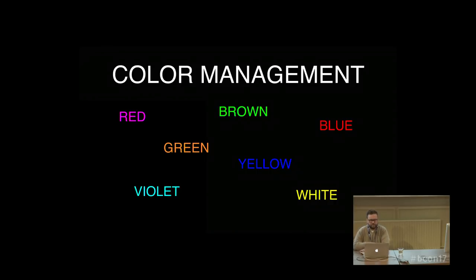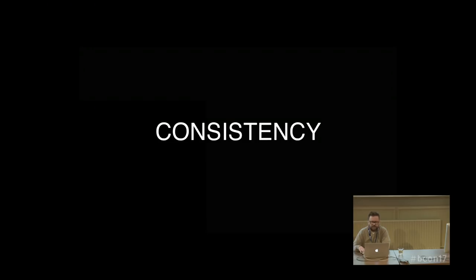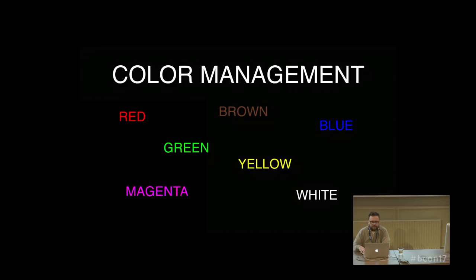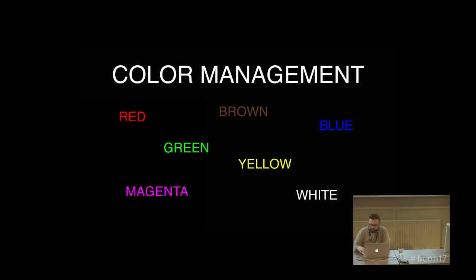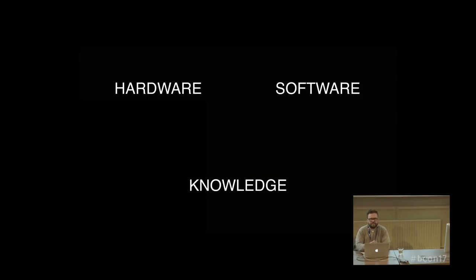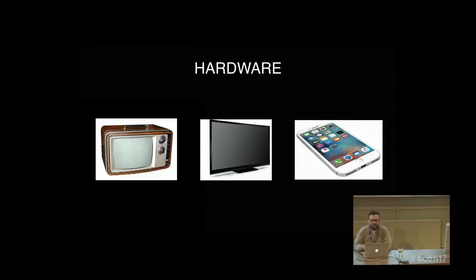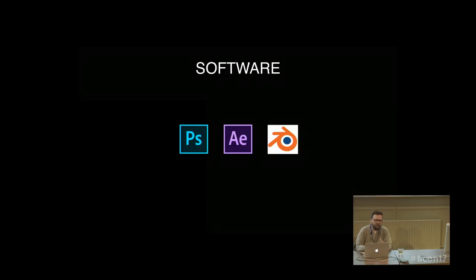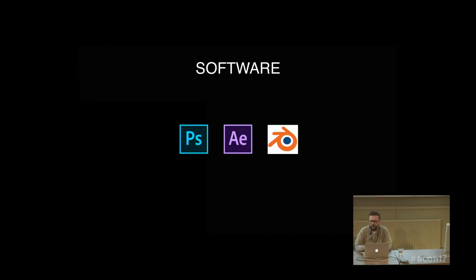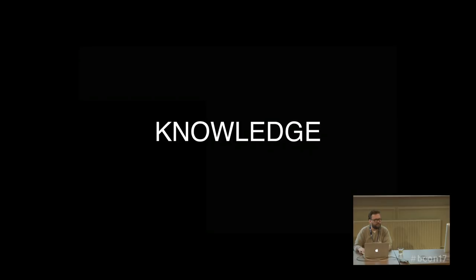Color management is all about consistency, as you can see on this image. I would like to show you some examples because color management involves hardware, software, and knowledge. When I say hardware, I mean displays and how they react to the signal. Software means how the software handles the colors, and of course, our knowledge — do we know what to do with all this? Let me show you the complexity of color management on one very simple example.